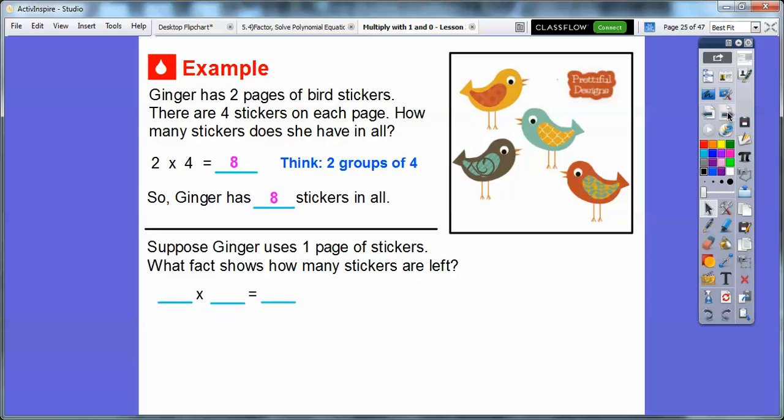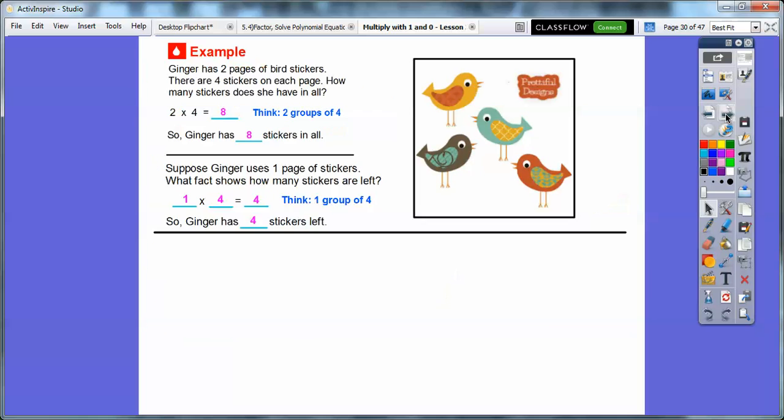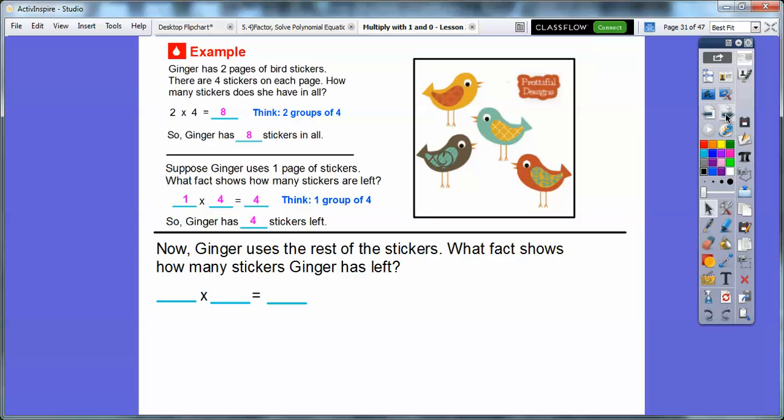Two times four is the same as four plus four. Suppose Ginger uses one page of stickers. She only has one page left. What fact shows how many stickers are left? Well, this two represented how many pages she had for four stickers. She only has one page left. So this is going to be one times four. And that's going to give us four stickers. Ginger's going to have four stickers left.